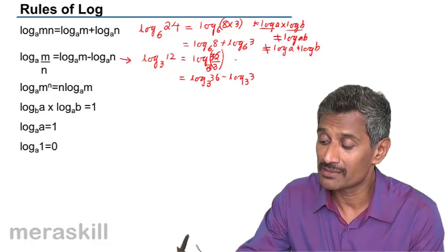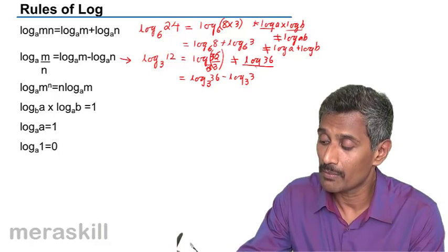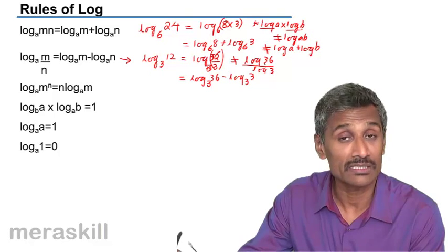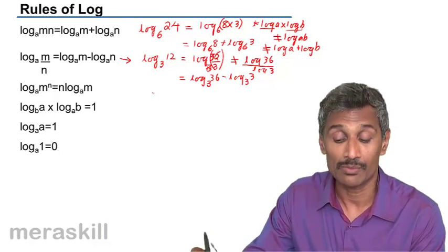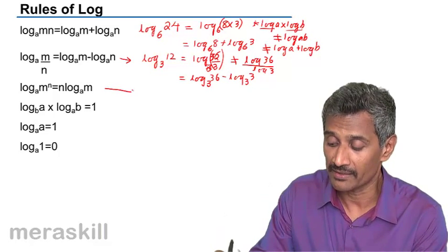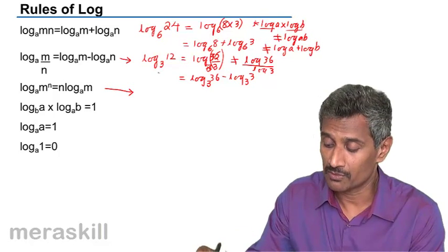Again, here we should not mix this up with log 36 by log 3. Log 36 by log 3 is not the same as log of 36 by 3. Then we have the next rule.